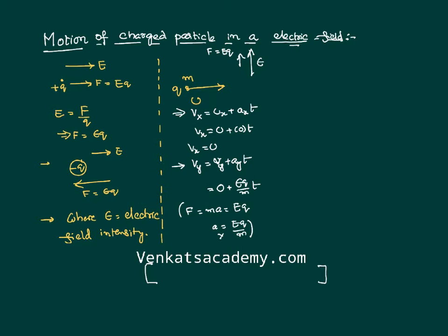Once I know the final velocity, the final velocity vector V is VX i-cap plus VY j-cap, which equals U i-cap plus EQ by M times T j-cap.